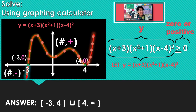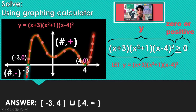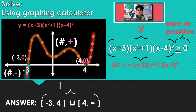This is technically correct, but not simplified — because if you're going to include 4, there's no reason to break up this interval. So that just means: include negative 3 through infinity. Our final answer is negative 3 through infinity.